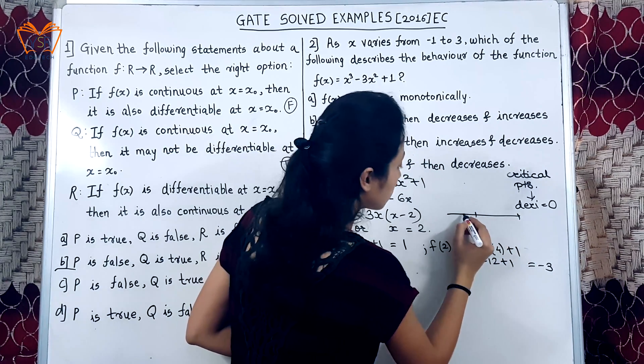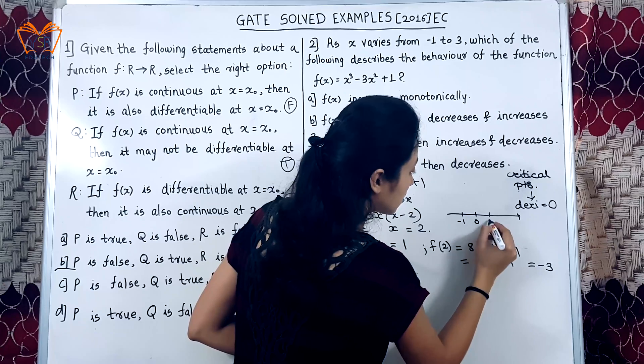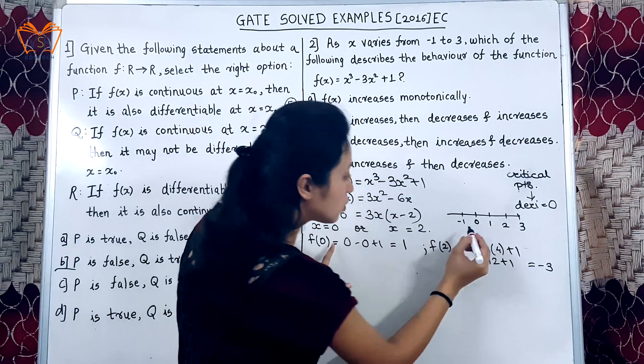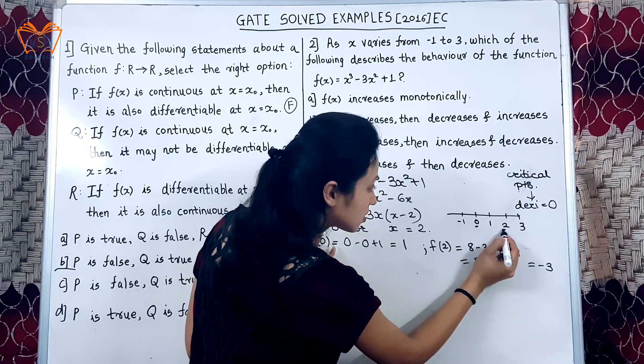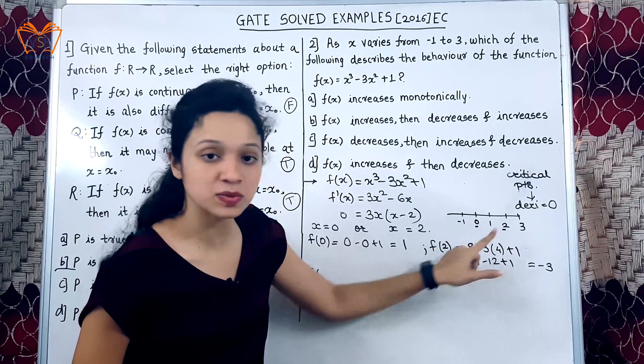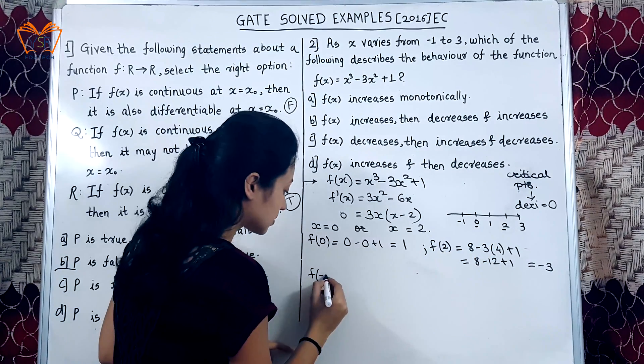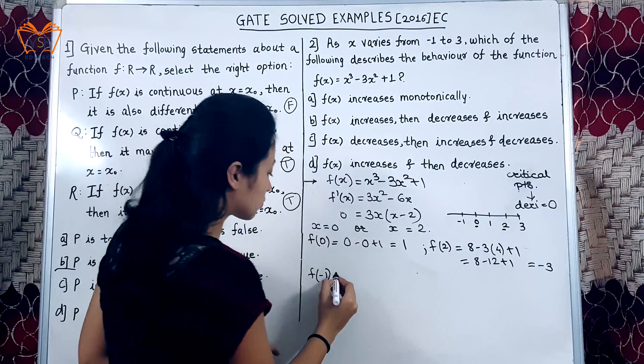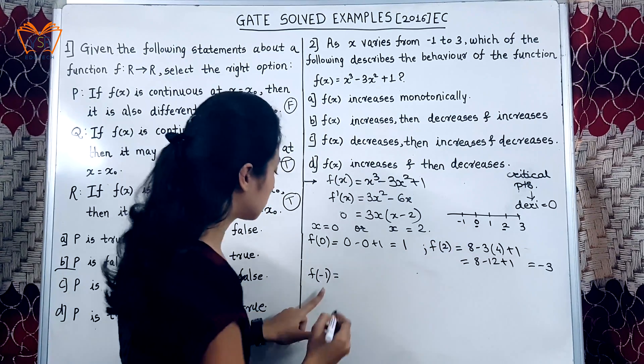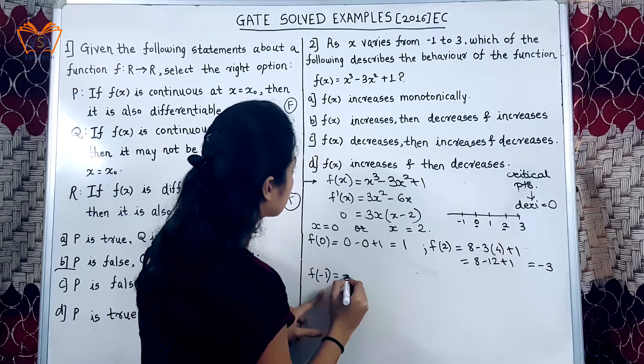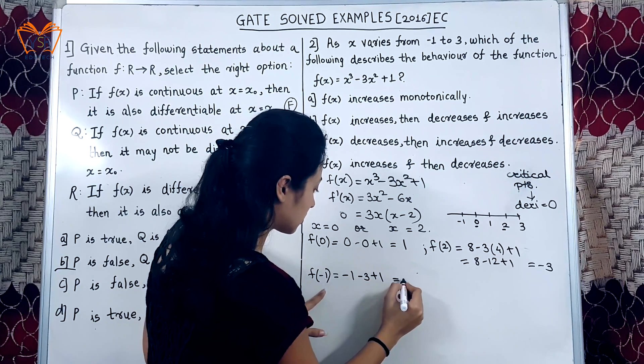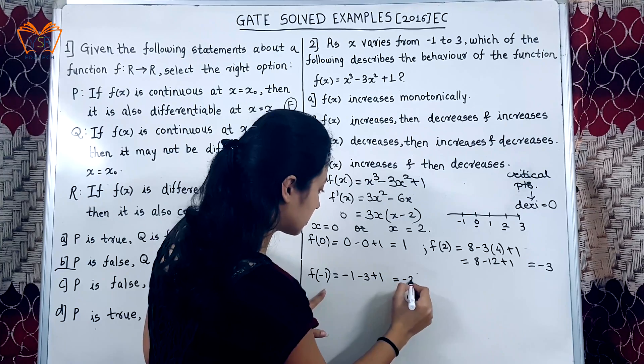Our function is increasing from minus 1 to 3. These are our two critical points. For our clarity first we will find out the value of function at points minus 1. So, that we will get the exact option at x equal to minus 1 the value of function will be minus 1 minus 3 plus 1, this will be minus 3.